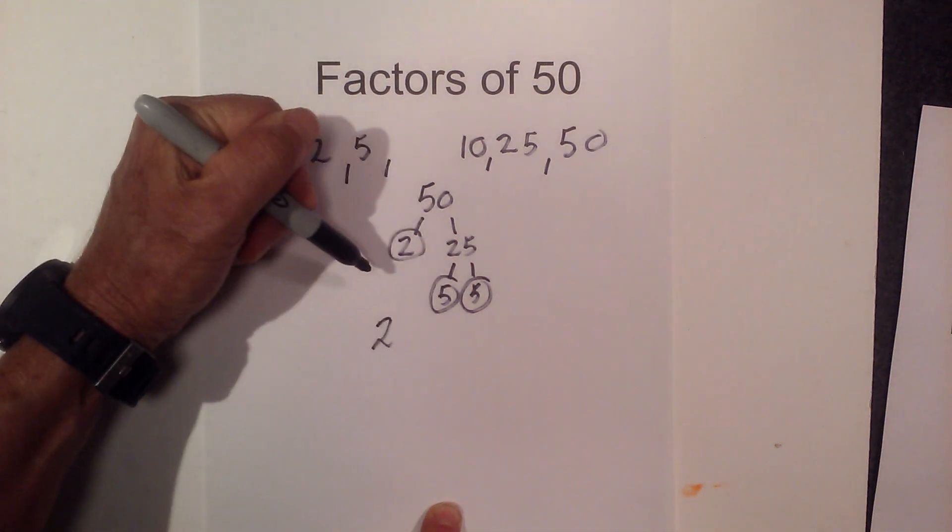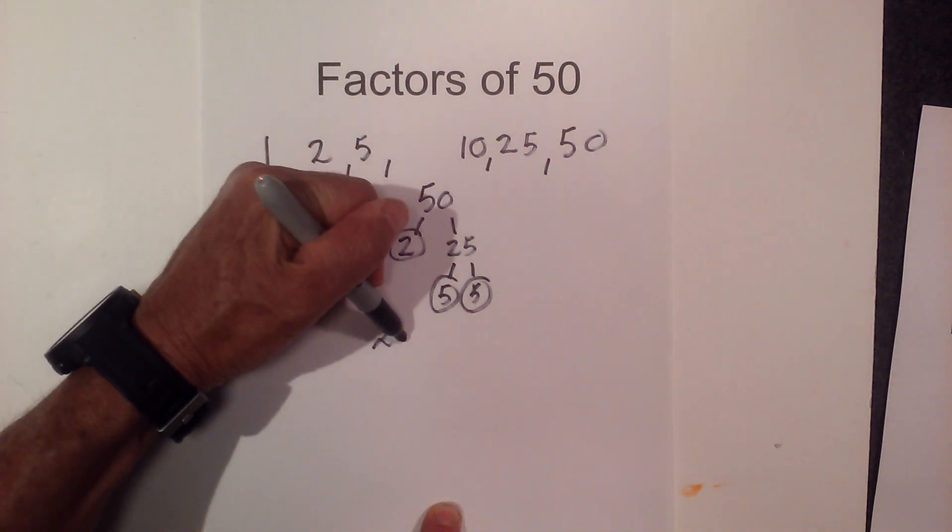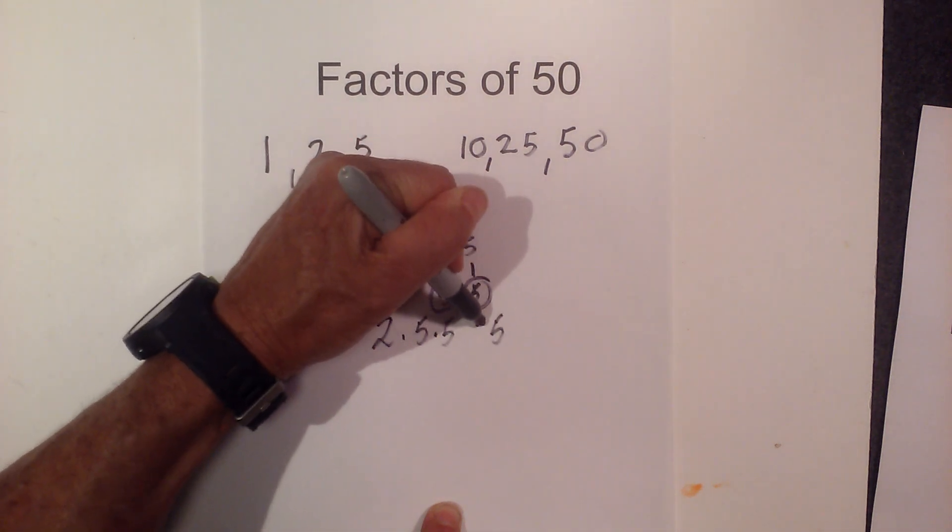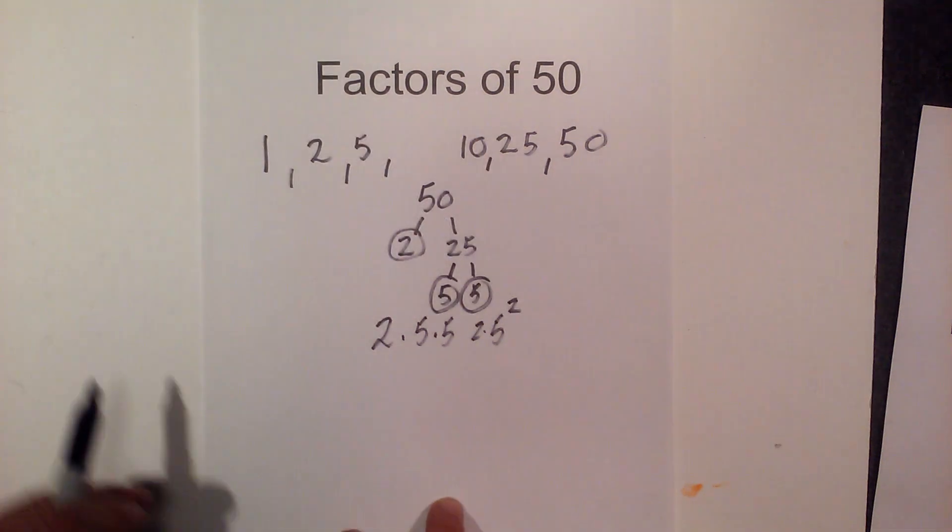So the prime numbers for 50, or the prime factorization, are 2 times 5 times 5, or 2 times 5 squared.